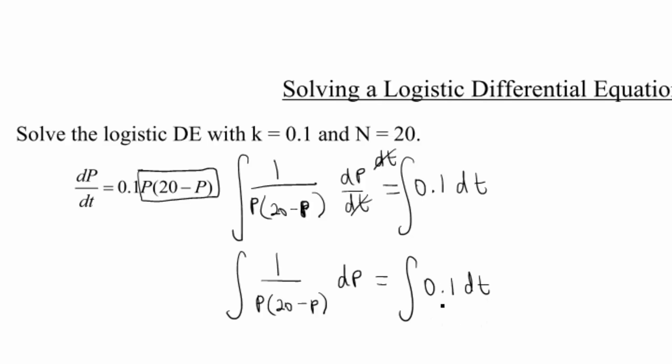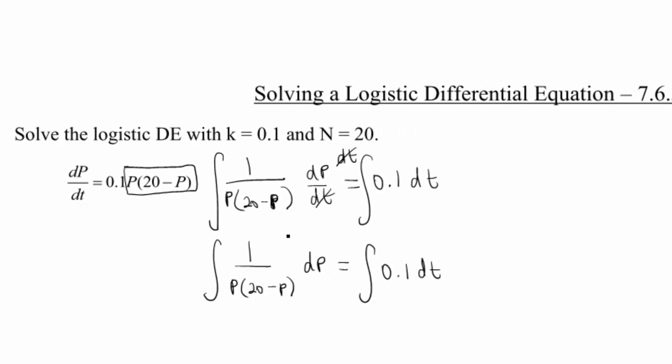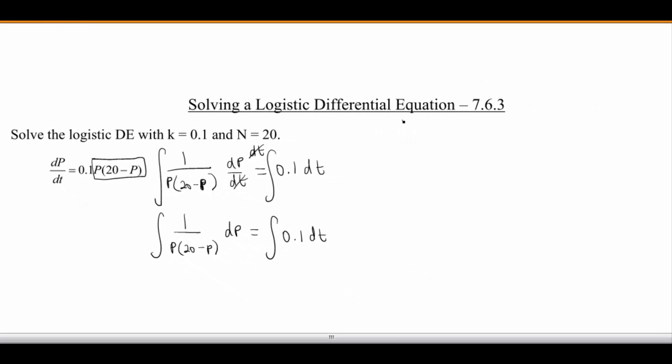My integral on the right, that's pretty nice, it's a constant. My integral on the left is going to make up for it. So this brings us back to the integration technique of partial fractions. Over here on the side, I'm going to do a little bit of work. I'm going to rewrite this as A over p plus B over 20 minus p. That's going to equal 1 over p times 20 minus p. The one good news is this denominator's already factored, so at least we didn't have to do that part.